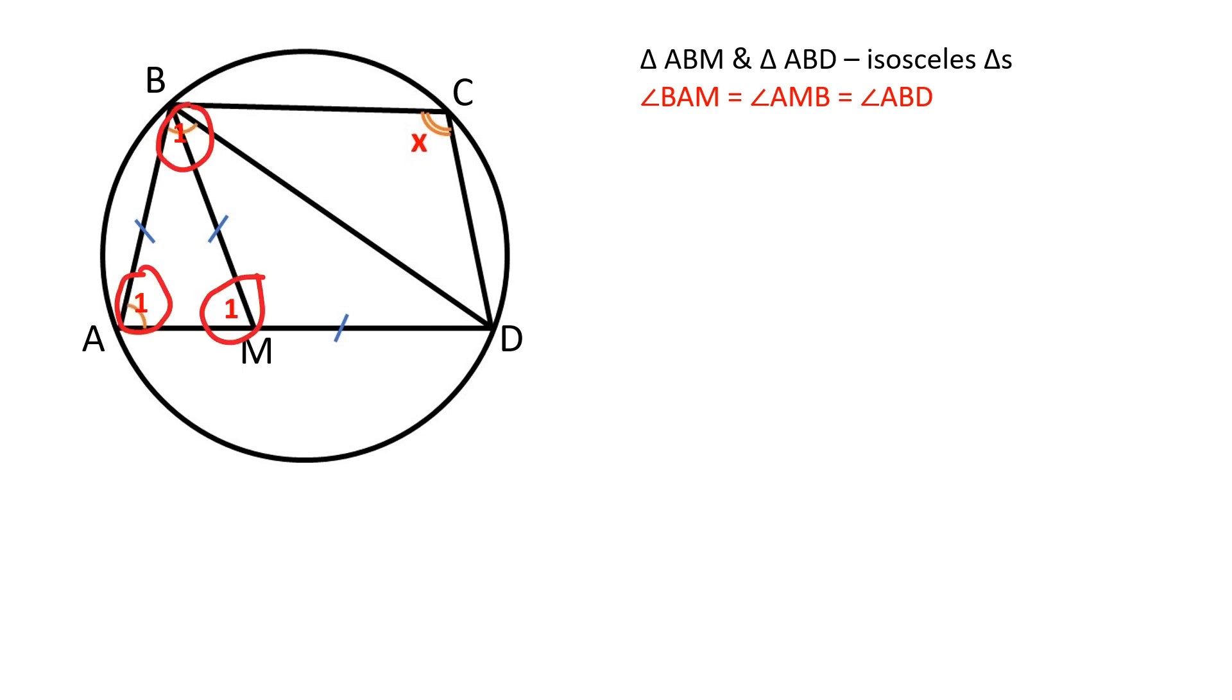Let's assign the number 1 to these three angles. Since triangle MBD is an isosceles triangle, angles MBD and MDB are congruent. Let's assign the number 2 to these two angles.